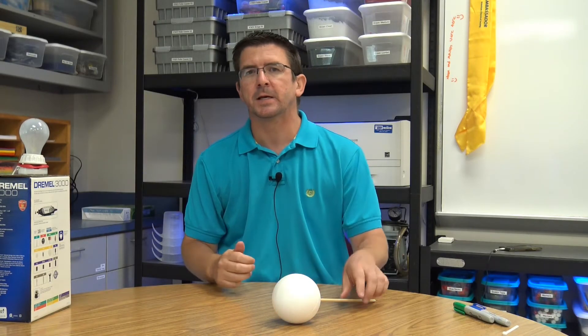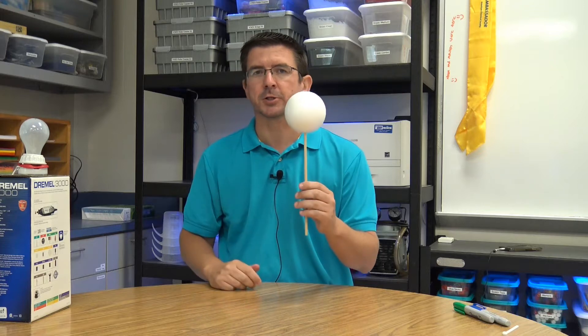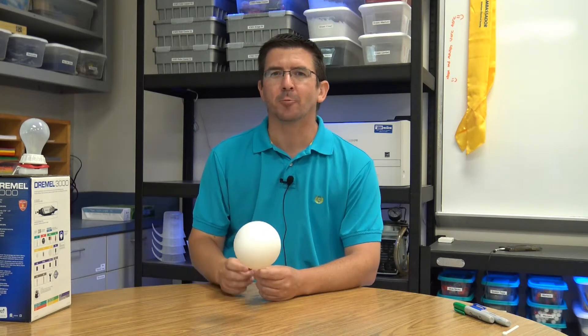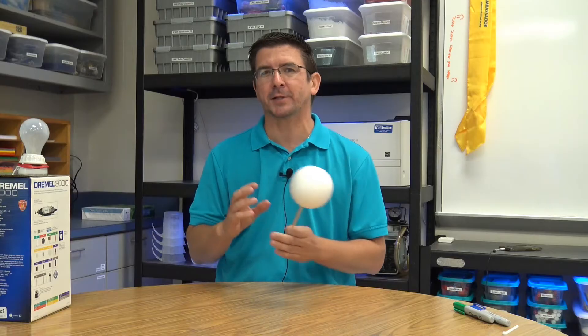And essentially what we have here is a model of the sun and Earth. The light bulb is going to represent the sun, and the styrofoam ball is going to represent the Earth. And we're going to cut the lights out in just a minute, and we're going to look at why the cycle of day and night happens the way that it does.